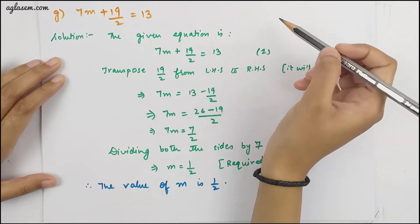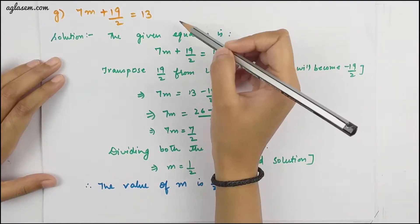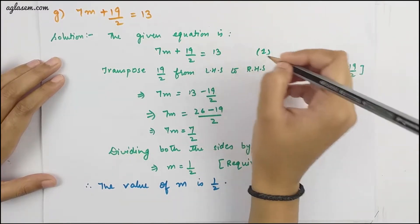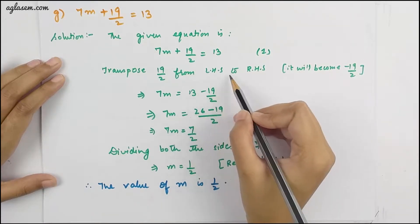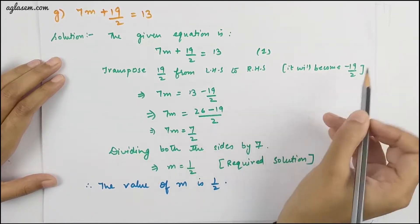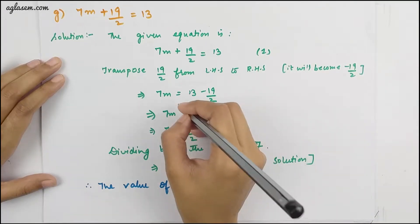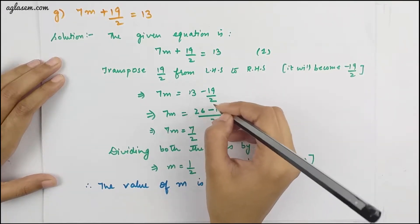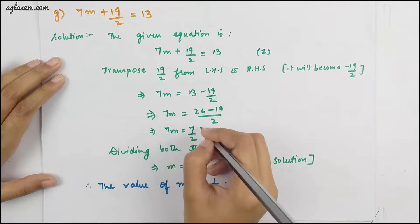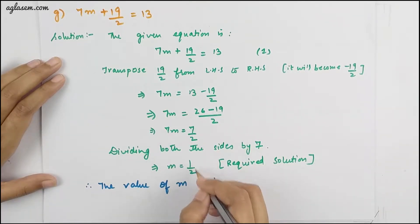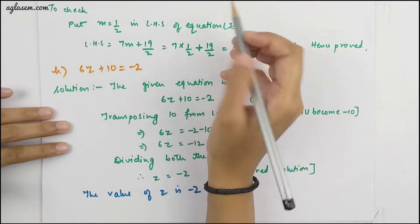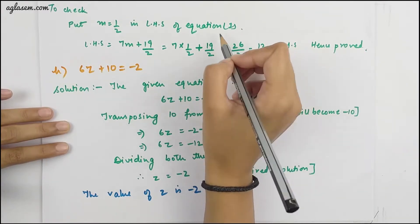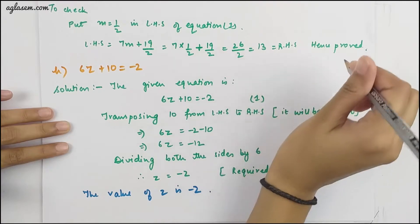The G part is 7m + 19/2 = 13. Transposing 19/2 from LHS to RHS, it becomes −19/2. So 7m = 13 − 19/2. From there, we calculate the value of m = 1/2. Therefore the value of m is 1/2. To check, put m = 1/2 into the LHS — that equals the RHS. Hence proved.